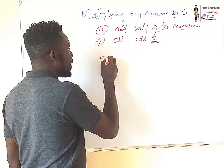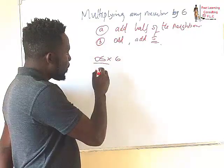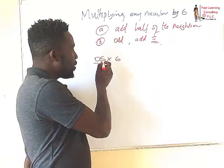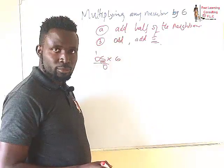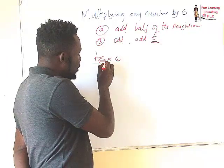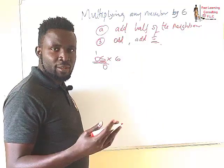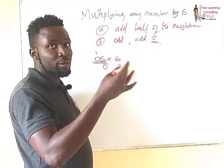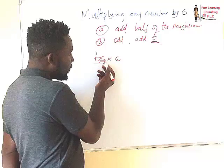Let's look at, for example, 5 multiplied by 6. We add a 0 here. Because 5 doesn't have a neighbor, we are going to only use 5. And because it's an odd number, we are going to add 5 to it. So 5 plus 5 gives us 0, and we carry 1. Now for 0, we only have to check half of the neighbor, which is 5 divided by 2 gives you 2.5, and we round it down to 2.